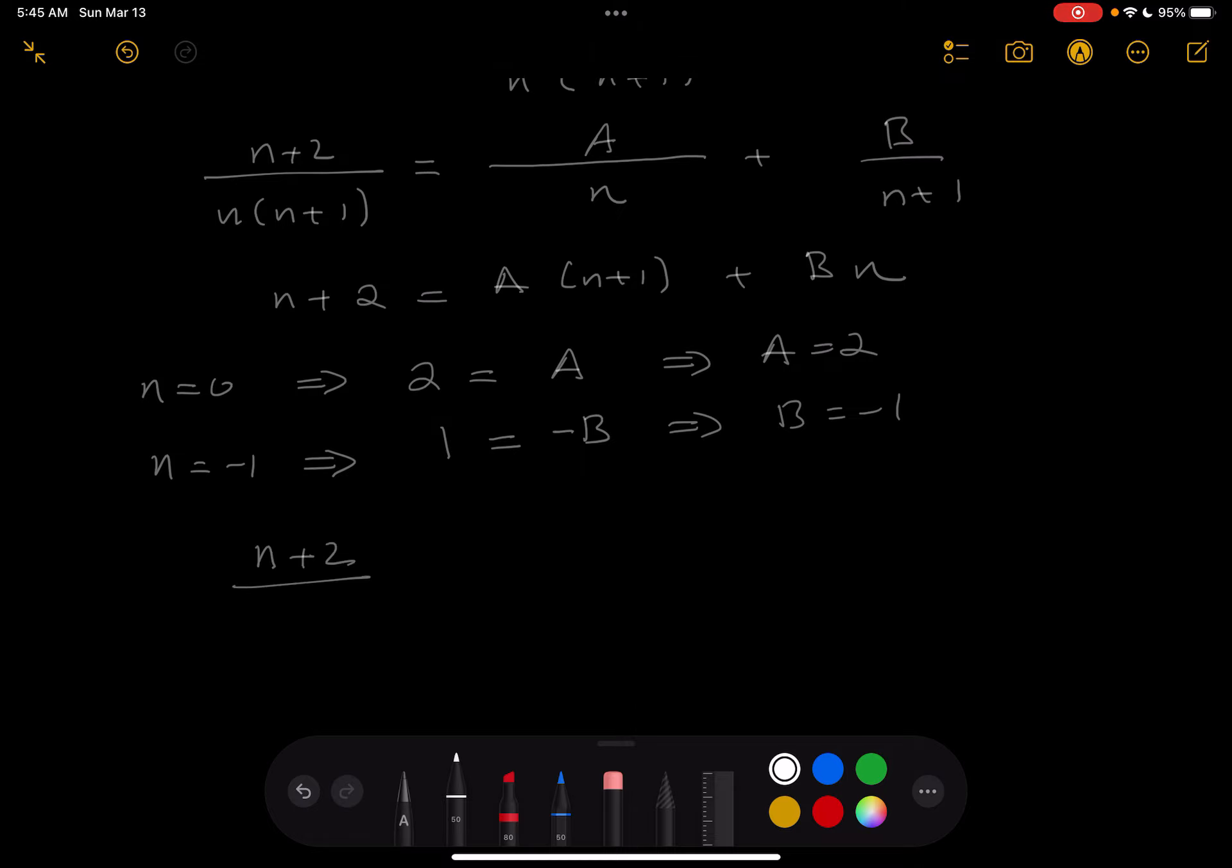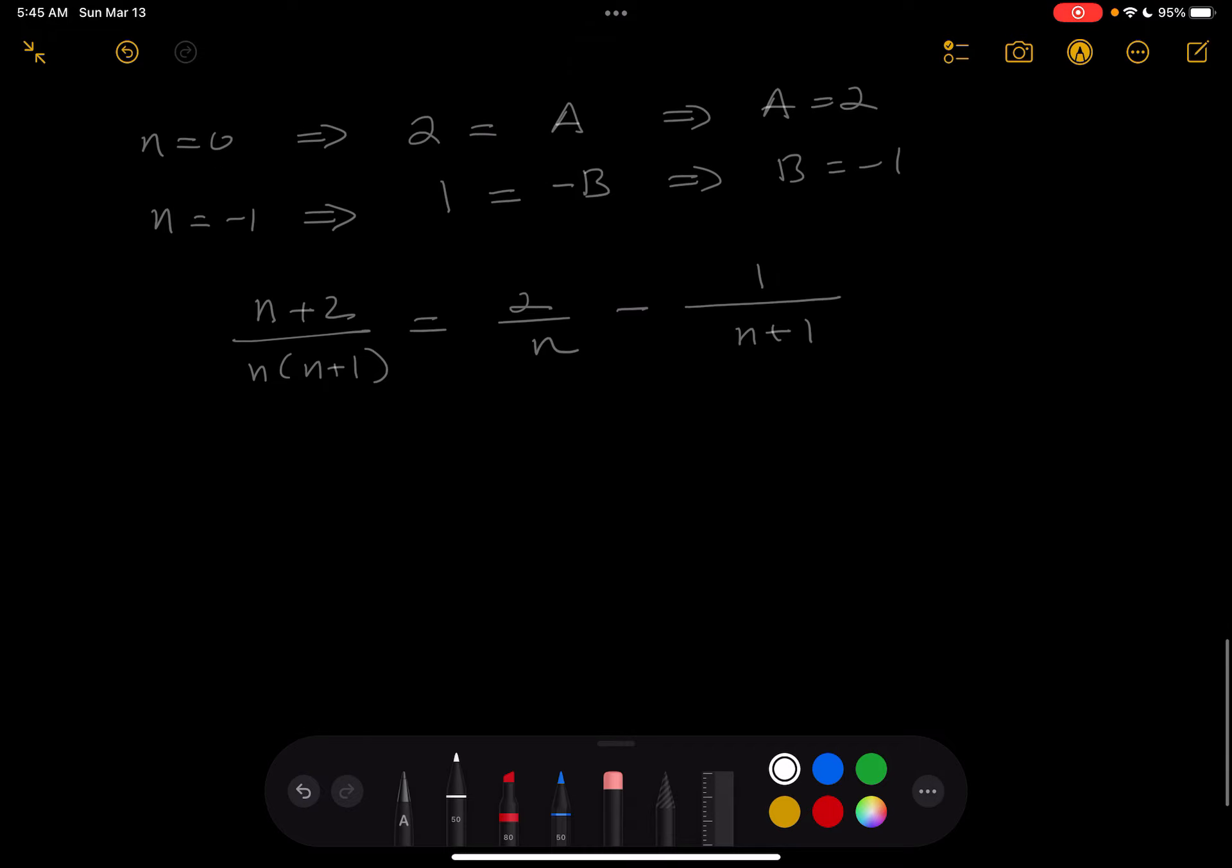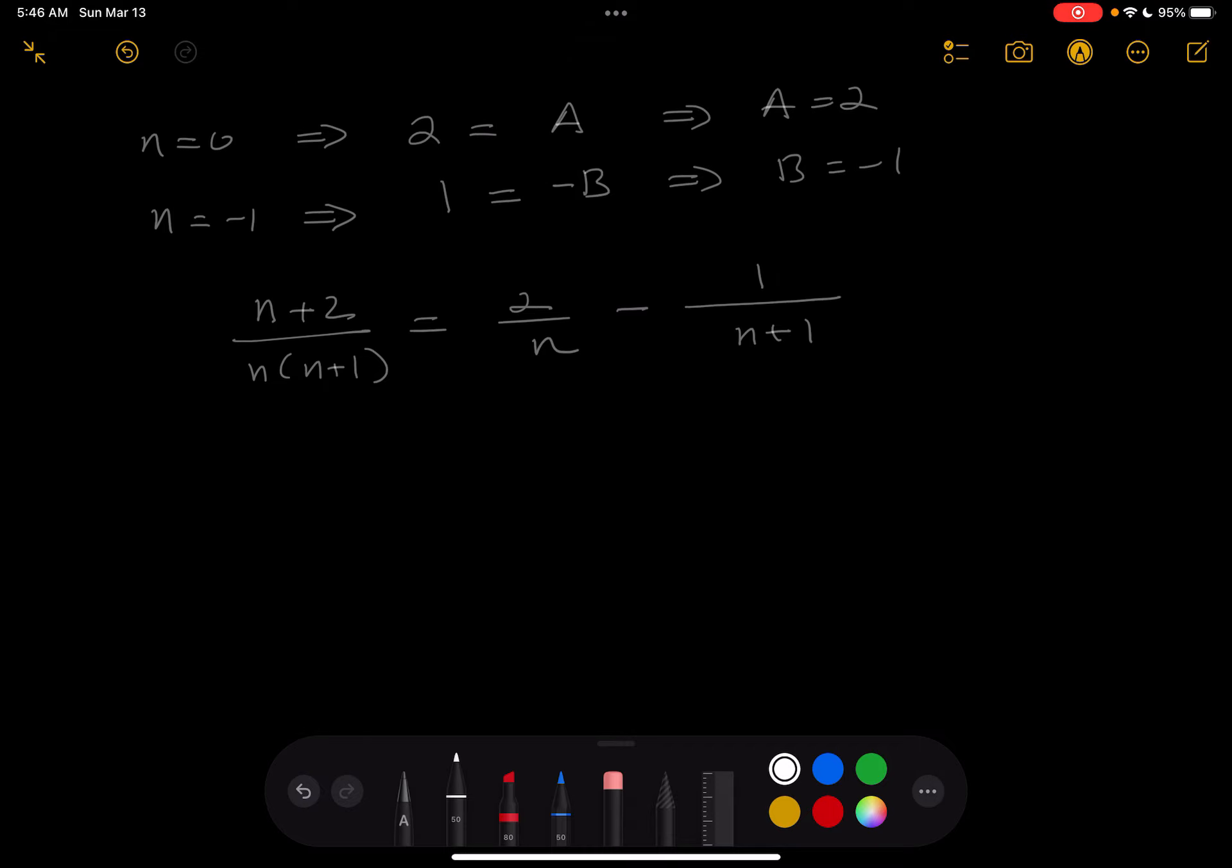So I'm going to write that down for you now. n plus 2 over n times n plus 1. Let's be careful. So what do you have? 2 over n minus 1 over n plus 1. Let's write that down again. And that's a sum now. I'm going to write down S_n now, big N.